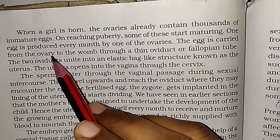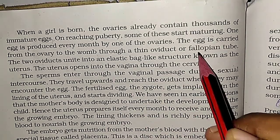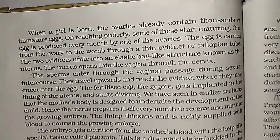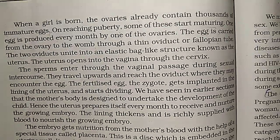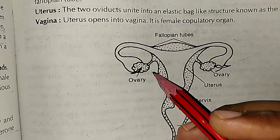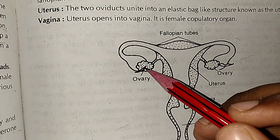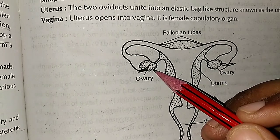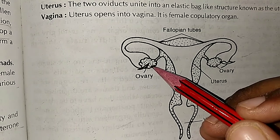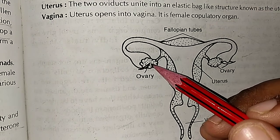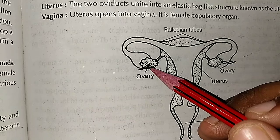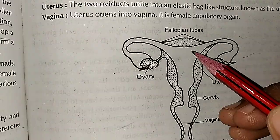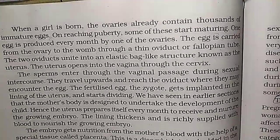This egg is carried from the ovary to the womb through a thin oviduct or fallopian tube. If we look at the image, these are our ovaries where thousands of immature eggs are present. At puberty the eggs mature, and this egg is carried from the fallopian tube to the womb.